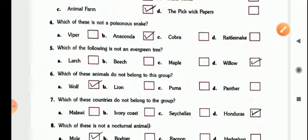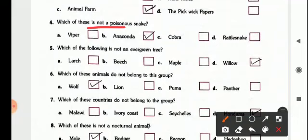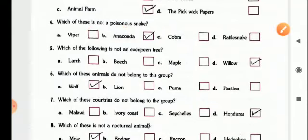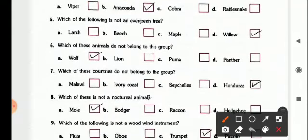Now, the next one, which of these is not a poisonous snake, so Viper, Cobra, Rattlesnake, so Anaconda is the not poisonous one.